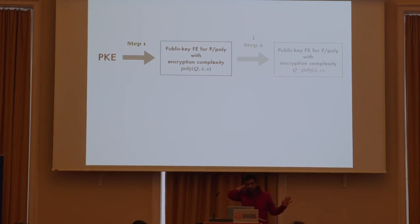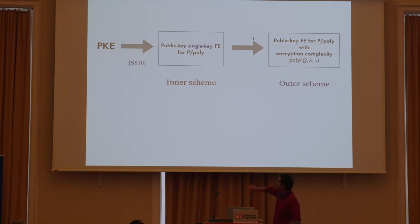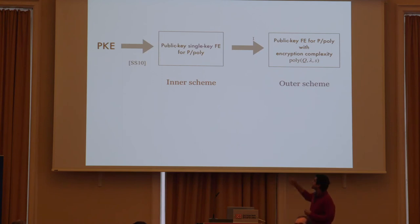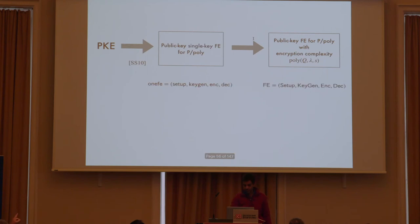The first step is to construct a public key FE scheme with large encryption complexity from public key encryption. I break this into two parts: first, start with a public key single-key FE scheme for poly-sized circuits — we know how to construct this from public key encryption. Then use this scheme to get public key FE for poly-sized circuits in the bounded key setting with large encryption complexity in terms of Q. I call the single-key FE scheme the inner scheme and use small letters for it.